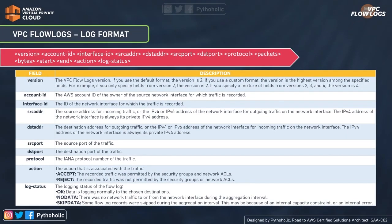Now let's look at the log format. The syntax of the flow log contains a lot of information, but here are the important ones. The first field is version — the VPC flow log version. The default format specifies version 2 and will choose the highest version among the specified fields. So if you specify version 2, the highest version is 2. If you specify a mixture of fields — say versions 2, 3, and 4 — it will pick the highest number, which would be version 4.